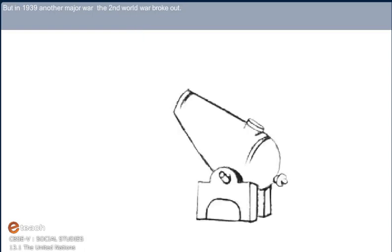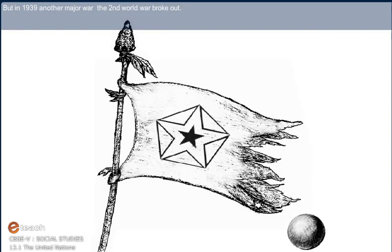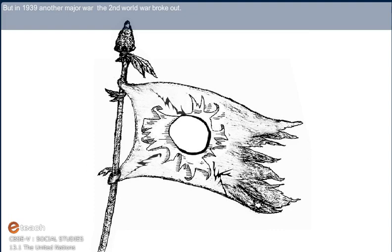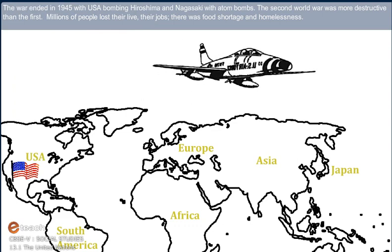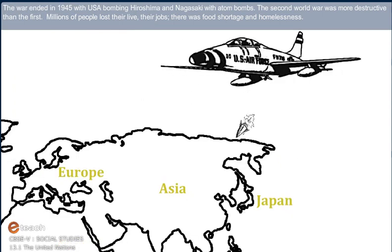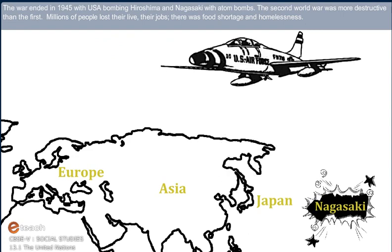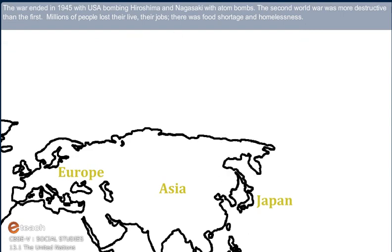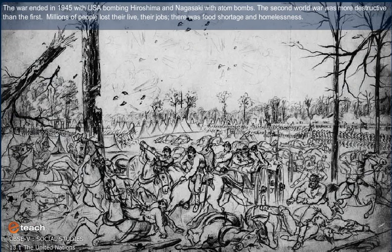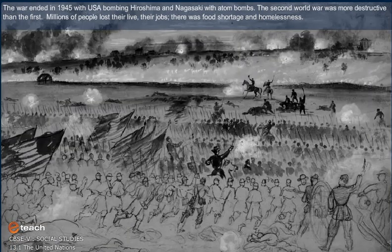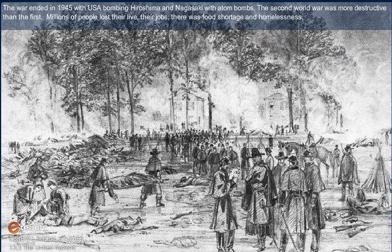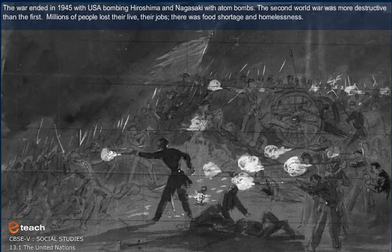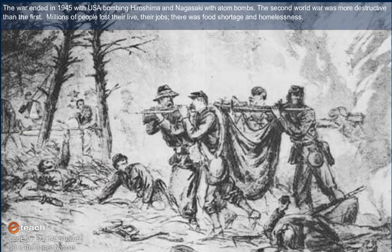But in 1939, another major war — the Second World War — broke out. The war ended in 1945 with the USA bombing Hiroshima and Nagasaki with atom bombs. The Second World War was more destructive than the first. Millions of people lost their lives and their jobs. There was food shortage and homelessness.